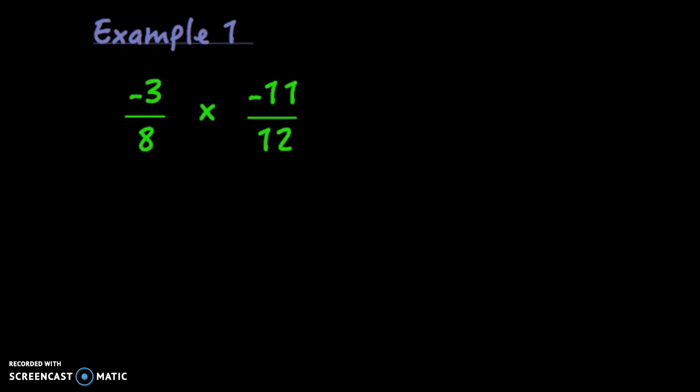So our first example is negative 3 eighths times negative 11 twelfths. Notice this does not have any mixed numbers, so we can move right on to step two, which is going to be to look for the common factors. I notice right away that negative 3 and 12 have a common factor of 3.